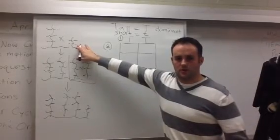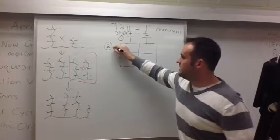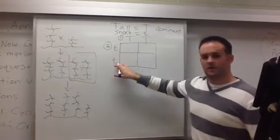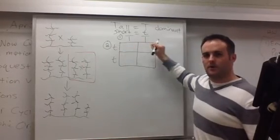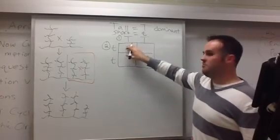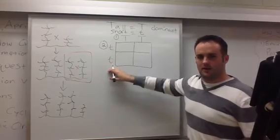It was a tall plant, but the letters that represent that tall plant were two capital T's. And parent 2, he saw was a short plant. He didn't know, but the genes for that plant, for that trait, were two lowercase t's. Make sure when you list your letters for your parents' alleles, you list them individually above each column and in front of each row.